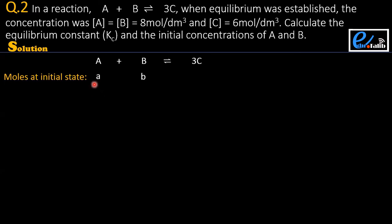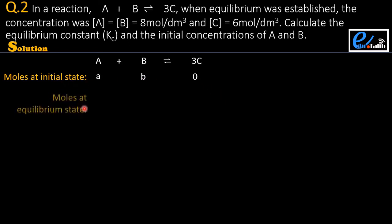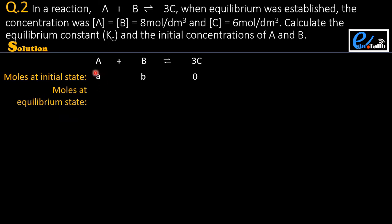At initial state the reaction has not been processed, so the number of moles of the product must be zero. Next we write the moles at equilibrium state. When equilibrium has been established, the number of moles consumed is x.